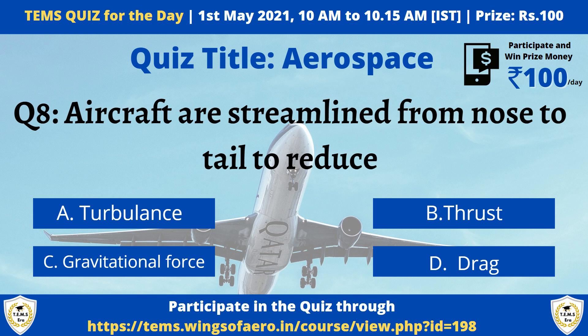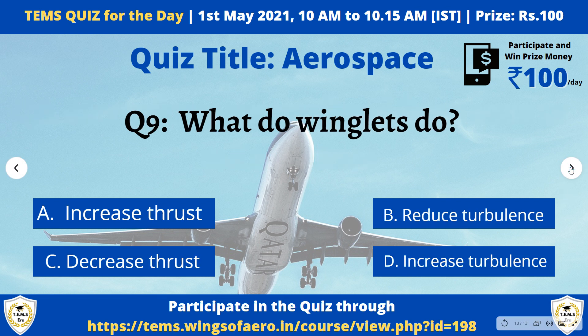Moving to question 9: What do winglets do? Option A: Increase thrust. Option B: Reduce turbulence. Option C: Decrease thrust. Option D: Increase turbulence. This is one of the easiest questions — every engineering or science student can answer this. To answer, participate through the Temps Arrow digital learning platform at temps.wingsofarro w.in and try to win rupees 100 per day.